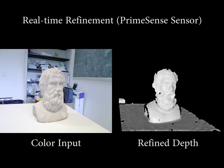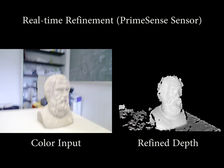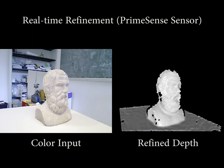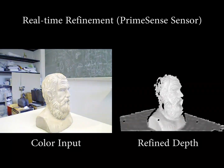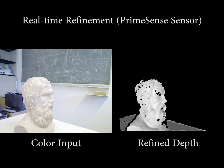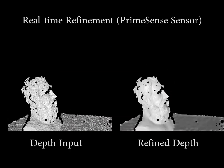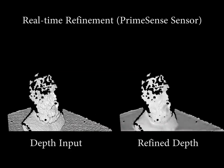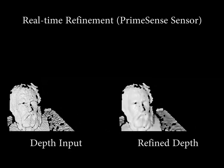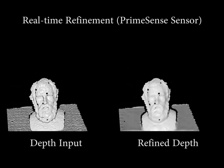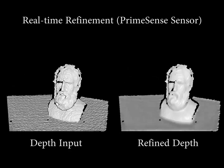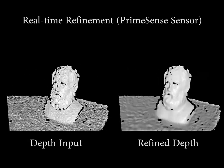In this sequence, we enable the frame-to-frame ICP for correspondence finding, and impose an additional prior term in the depth refinement. This stabilizes the refined depth, even if the camera shakes considerably.